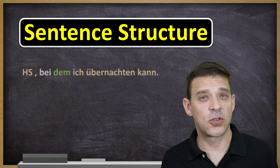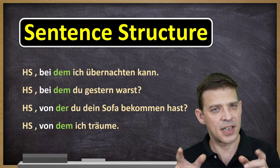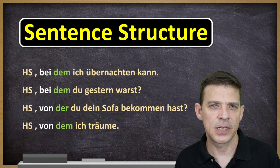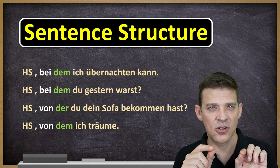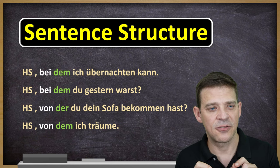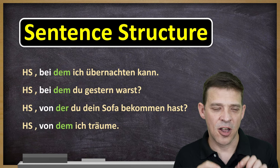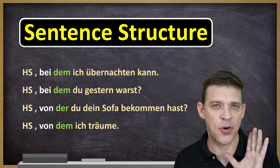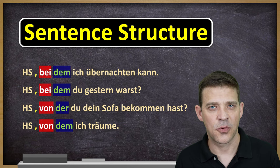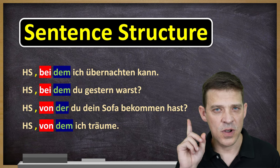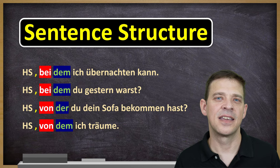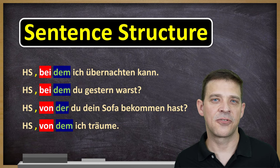Let's go to the sentence structure — it's pretty straightforward. As you can see in all the examples, it's always first the main clause; you have to start with the main clause, you cannot start with the relative clause. And then number one, first position is the preposition and then the relative pronoun — so always first the preposition right after the comma and then the relative pronoun.